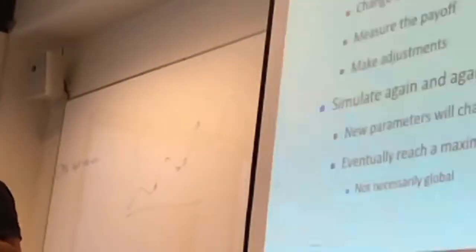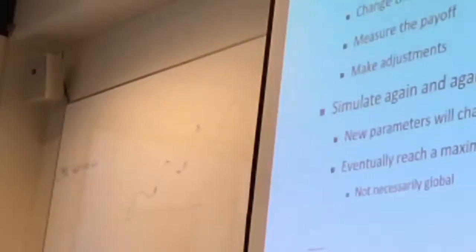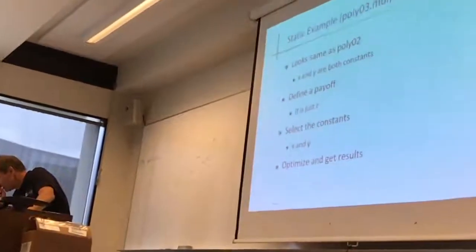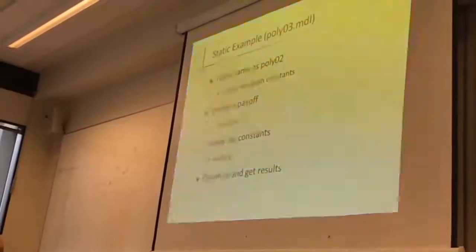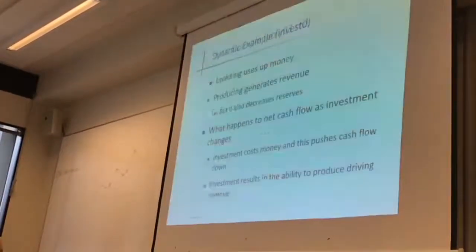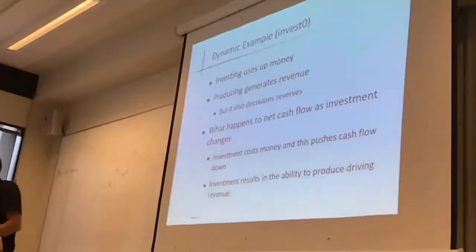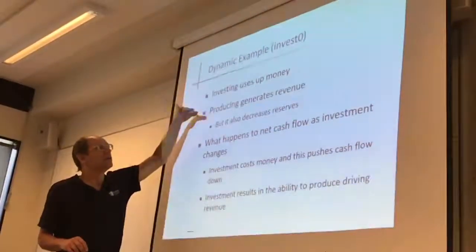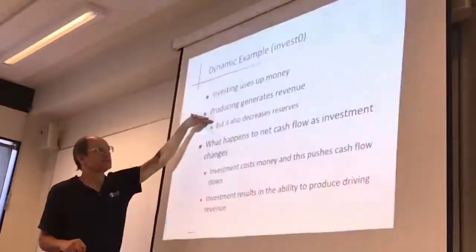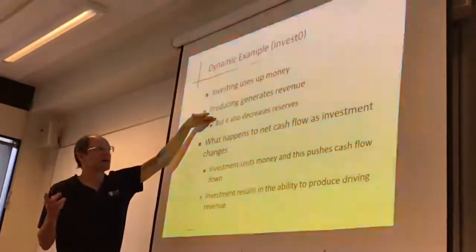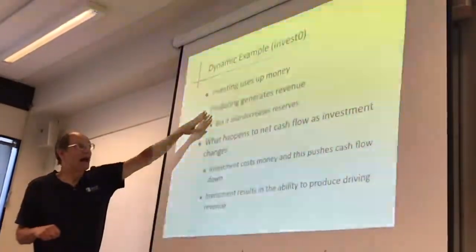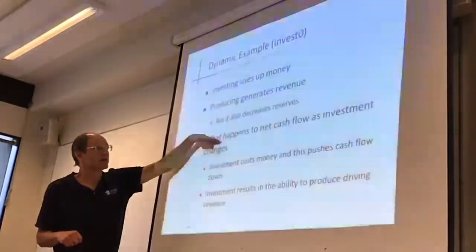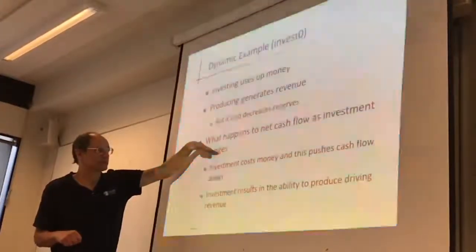There are some ways to both detect that and work around that. So, poly zero three — invest zero one is a real model. This is going to be a real model. Investing uses up money, but it also ends up generating revenue. This is an oil field depletion model — it generates revenue but also decreases reserves. We're going to look at what happens to net cash flow as investment changes.